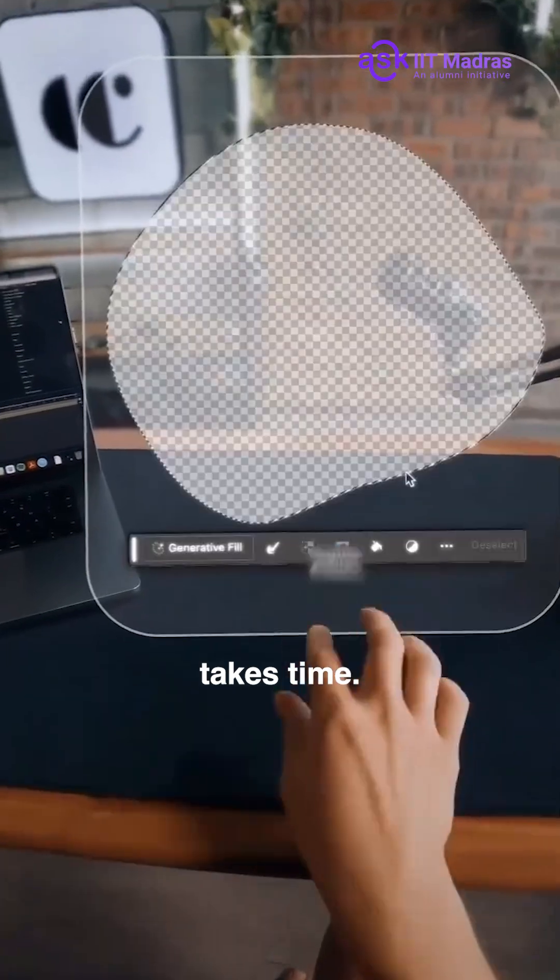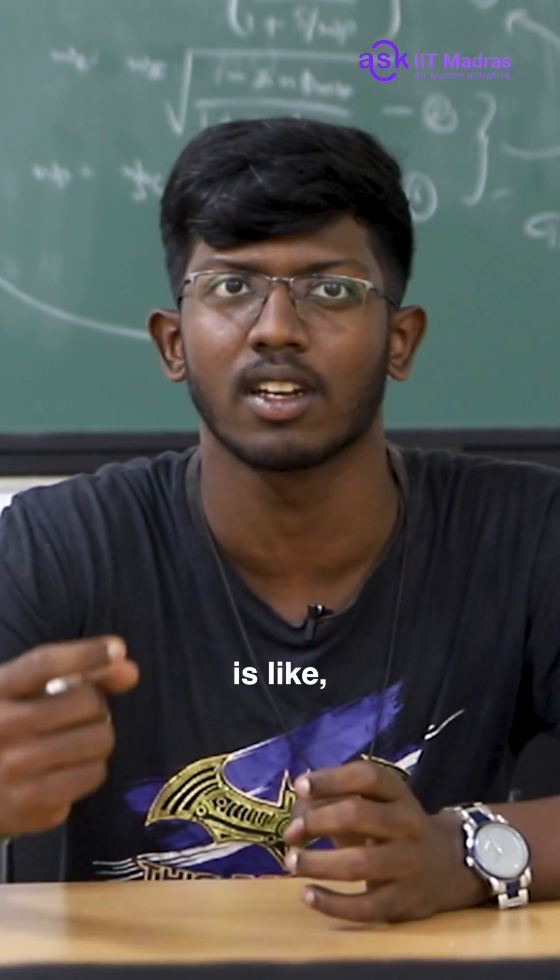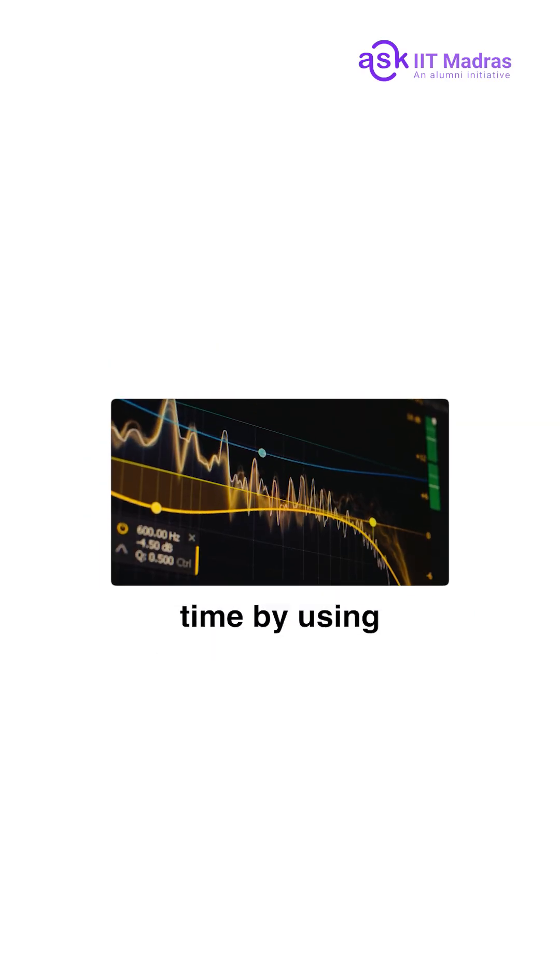What happens is generating an image takes time. Irrespective of what model you use, it takes a lot of time. The idea which we are trying to come up with is to reduce that generation time by using some clever signal processing techniques and information theoretic methods.